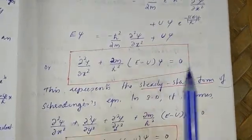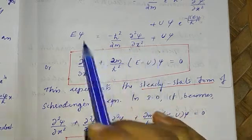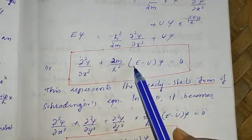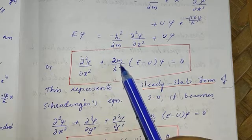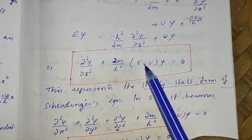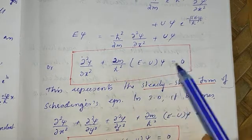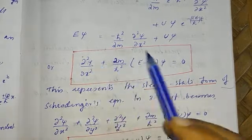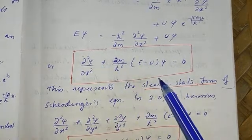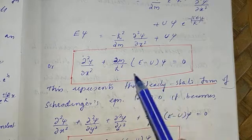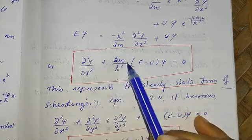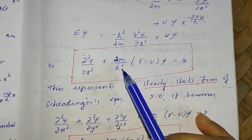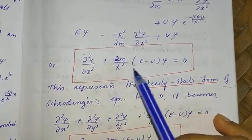Rearranging the remaining terms, we obtain: d²ψ/dx² + (2m/ℏ²)(E − U)ψ = 0. This is the steady-state or time-independent form of Schrödinger's equation. There is no time factor appearing in this equation — the time dependency has been fully removed.